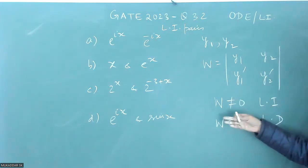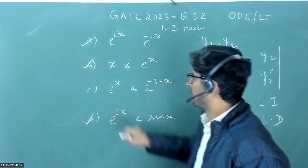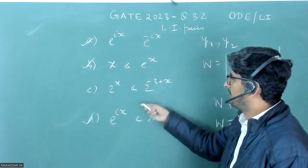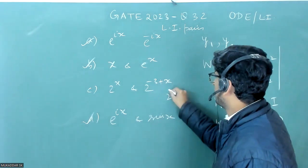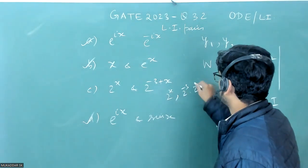So if you check this, you will find that this this and this Wronskian is not equal to zero. And in this case, they are linearly dependent and you can see this also e to the power x and sum 2 to the power minus 3 into 2 to the power x.